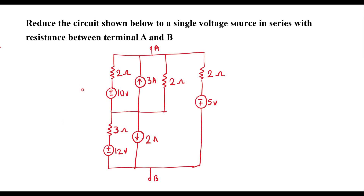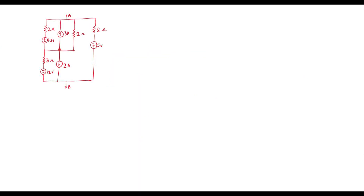In this video, let me consider one numerical on source transformation. We need to reduce the circuit shown below to a single voltage source in series with resistance. Let this terminal be A and this terminal be B. We are supposed to convert or reduce this entire circuit to a single voltage source in series with resistance. We can observe that no resistors are in series or in parallel, so we can apply source transformation to simplify this circuit further.